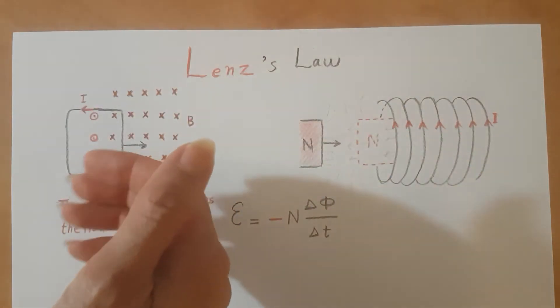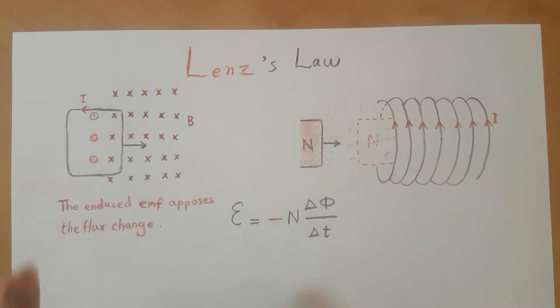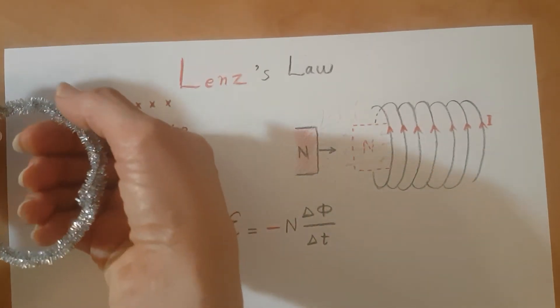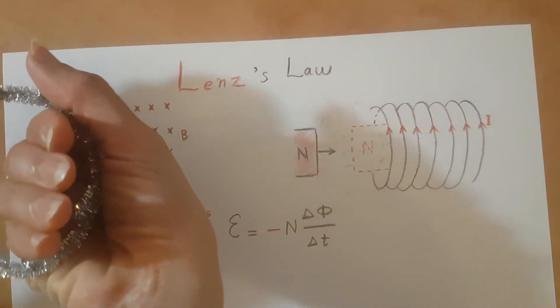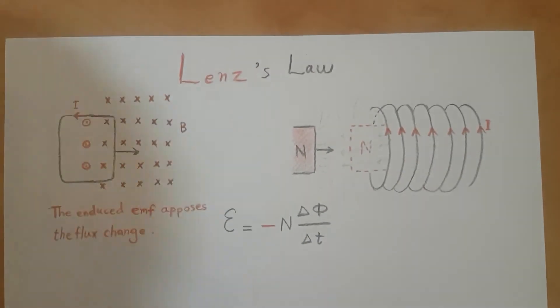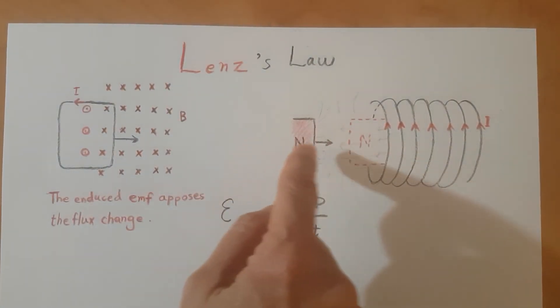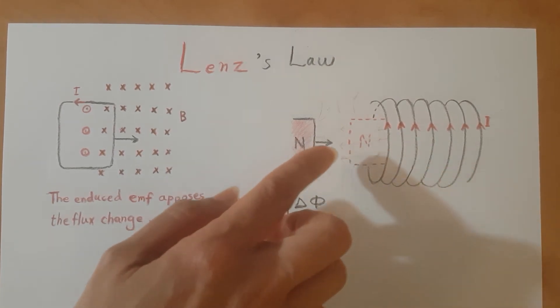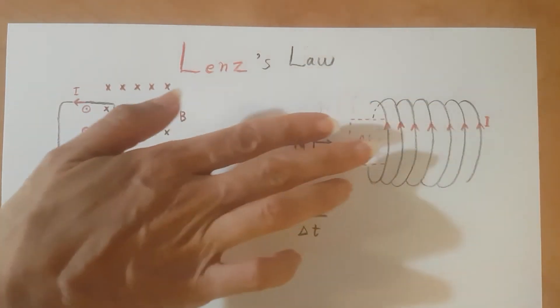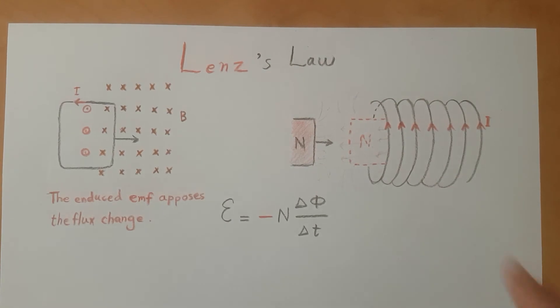Like this I is producing outside going B's. And in here, this magnet is getting close to solenoid, so the these B's going in this direction are increasing inside the solenoid.